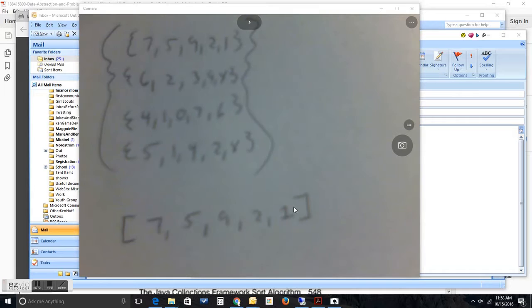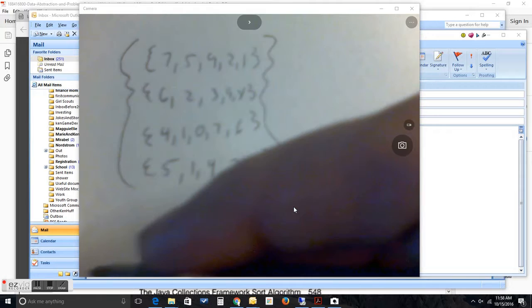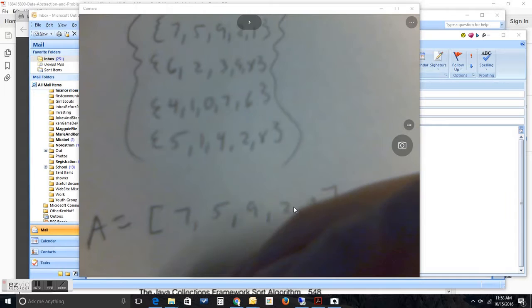Now, the first array in that matrix is just this. So, this is what we call a one-dimensional array. You can see that these numbers, I have an array here effectively like seven, five, nine, two, one.